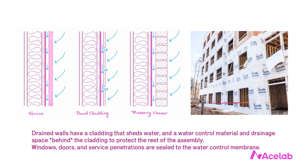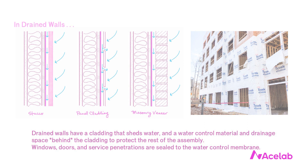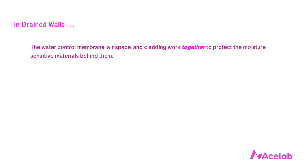Then let's talk about what the rules are and why there's so much controversy over the rules themselves. Most walls in North American residential and commercial construction are drained walls. Drained walls have a cladding that sheds water and a water control material and drainage space behind the cladding to protect the rest of the assembly. Windows, doors, and service penetrations are sealed to the water control membrane — the building codes refer to this as the water resistive barrier (WRB). This water management strategy permits us to build out of lightweight moisture-sensitive materials.